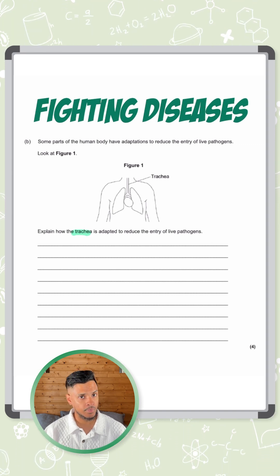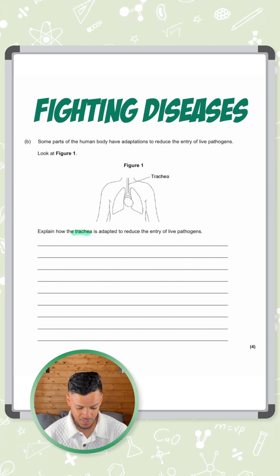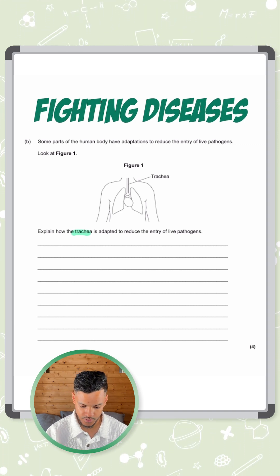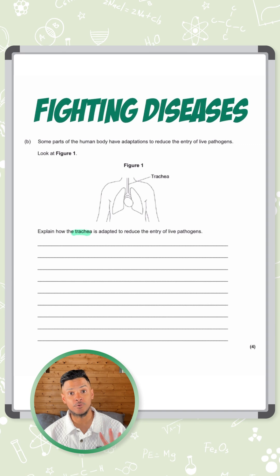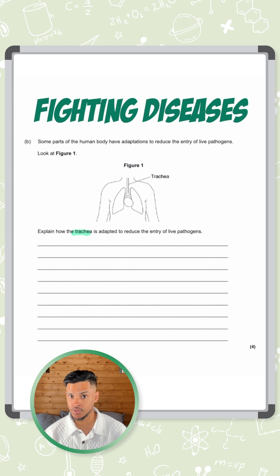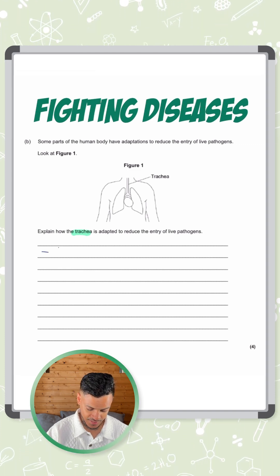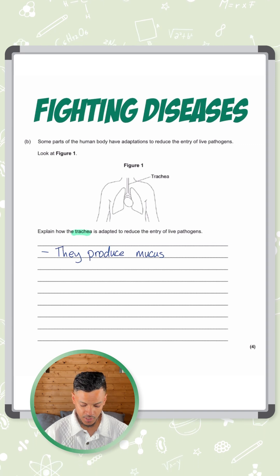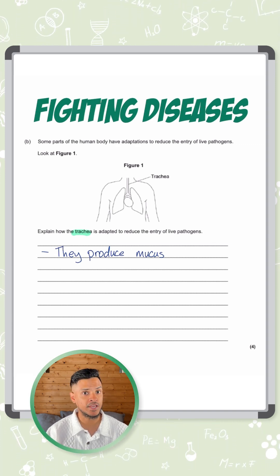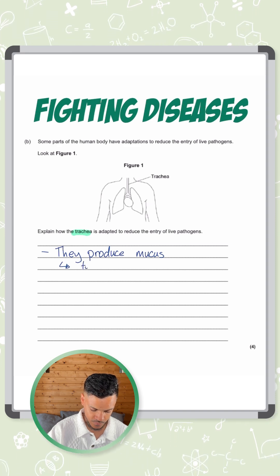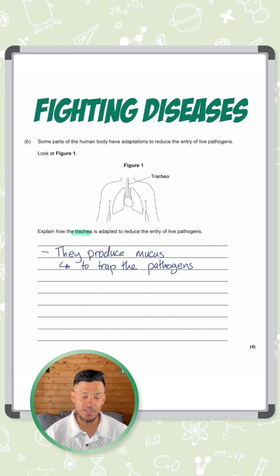We have defenses to stop those pathogens travelling all the way to the lungs and entering the blood. There are two main adaptations, but since this is a four-marker we need four points — so we need to expand on each adaptation. The first is that the trachea produces mucus — that's one mark. For the second mark, we explain that the mucus is there to trap the pathogens.